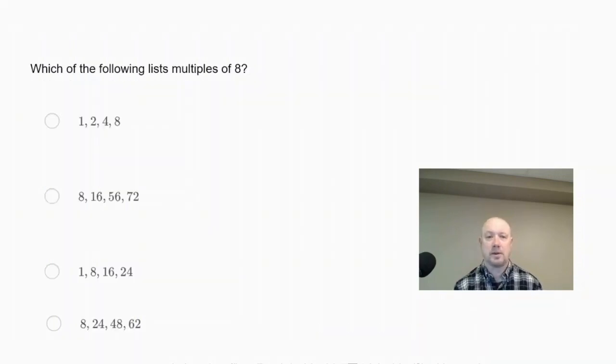Which of the following lists multiples of 8? Is it 1, 2, 4, 8, or 8, 16, 56, 72, or 1, 8, 16, 24, or 8, 24, 48, 62? So if we want multiples of 8, that means that 8 must divide into our numbers.